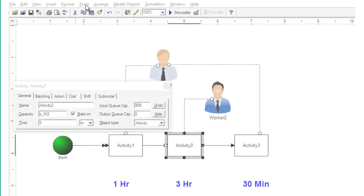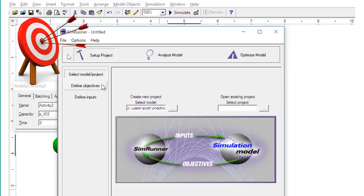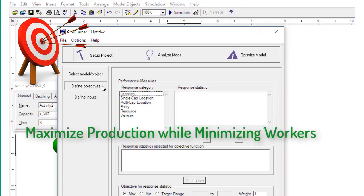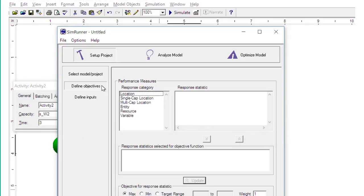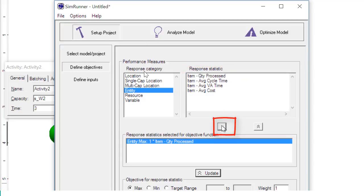From the tools menu, select SimRunner. Create a target for the optimization. A target is created by selecting stats that support the goal. In this model, given a specific arrival rate, I'm trying to achieve the maximum production with the least number of resources. To get the maximum production, we need to know the number of entities that exited the model. Under category, select entity, then select the statistic quantity processed and move the selection into the goal. This stat is to be maximized. Select maximize and then update.